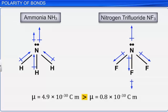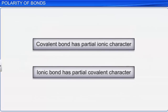We can conclude from the polarity of bonds and dipole moment that a covalent bond has a partially ionic character. Based on Fajan's rule, we can see that ionic bonds also have some partial covalent character. To understand the partial covalent character in an ionic bond, we should know Fajan's rules.